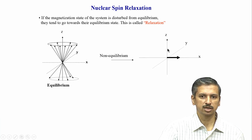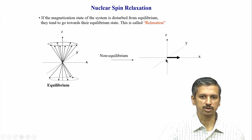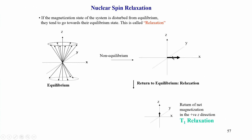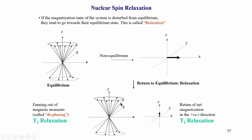There are two things to achieve: one is the z-axis recovery, and the other is de-phasing in the x-y plane. The de-phasing vectors are randomized in the x-y direction while coming together in z. These two pathways are called relaxation. T1 relaxation is z-axis recovery, and T2 relaxation is the de-phasing or decoherence of vectors — returning from coherence back to the equilibrium randomized state.